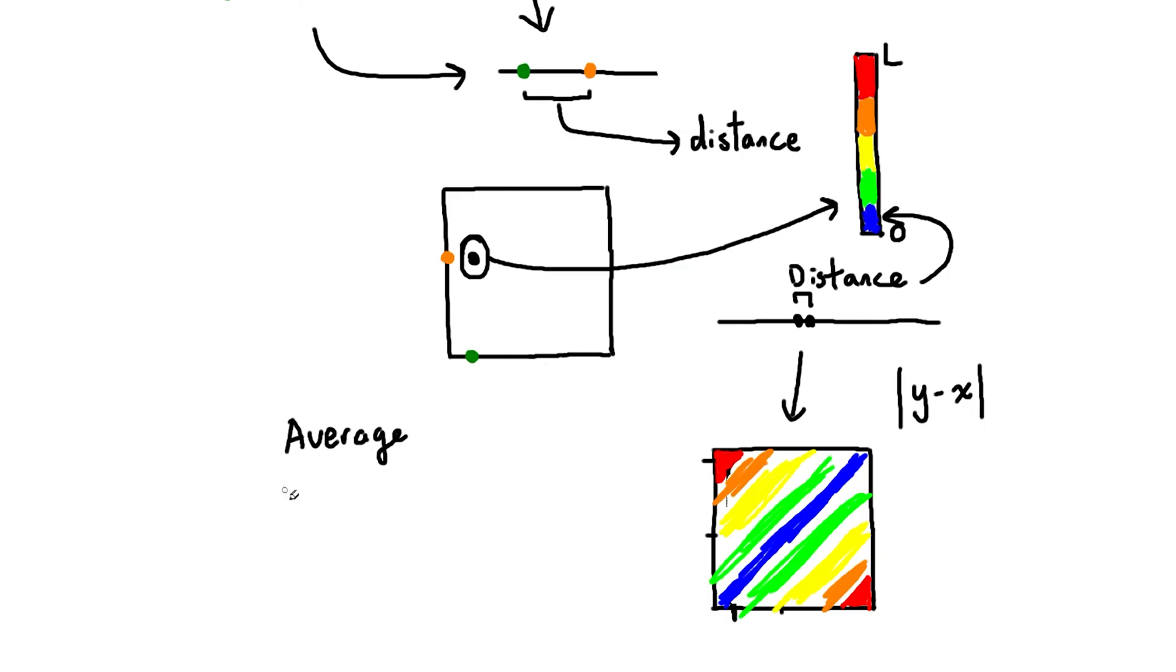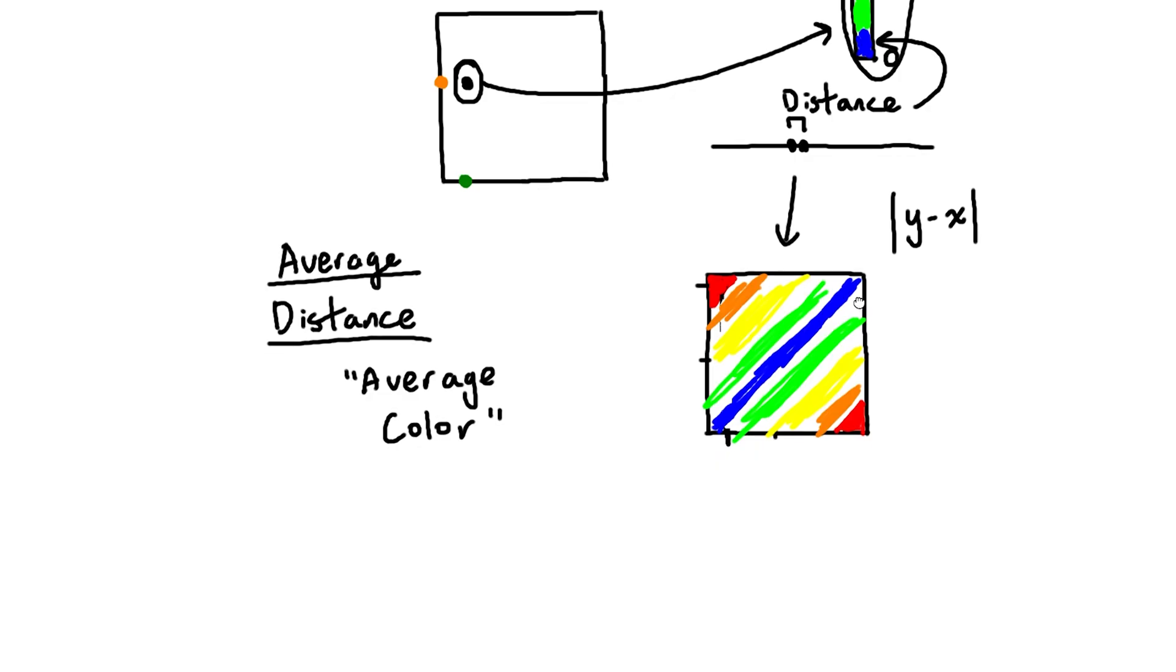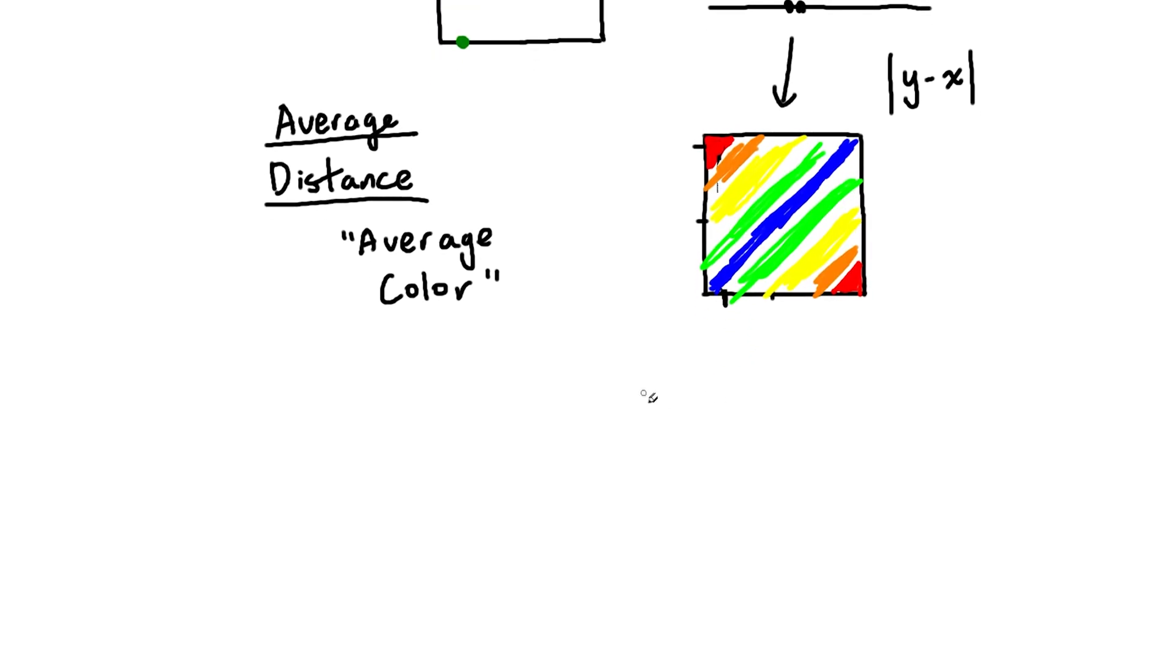But what does this have to do with the question? We do have distance represented with color, so that means average distance, which we're trying to find, would be represented with average color. And looking at our square, we see that there is more blue than red, which means that the average color would probably be something around yellow-green, which matches up with l over 3, the correct answer. So we are on the right track.